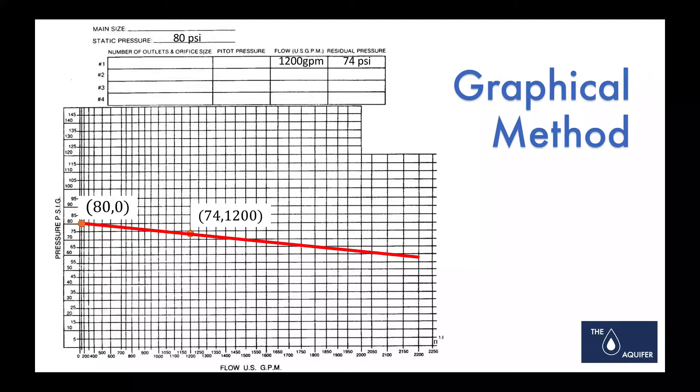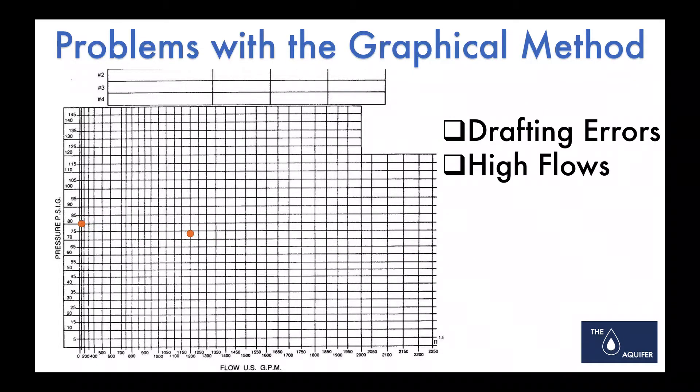You know, my guys were great, but I always wondered about their abilities to draw these accurately. I always felt like there were drafting errors. Like if you had a bad day and you didn't really hit the dots, you could really miss your data point out here. Or what if you had flows that were beyond the chart?